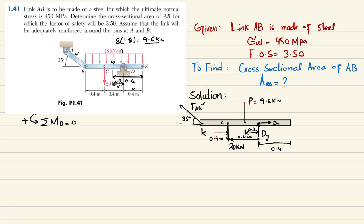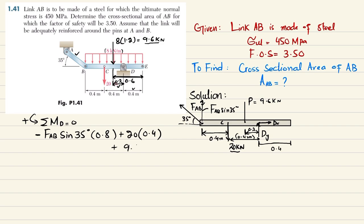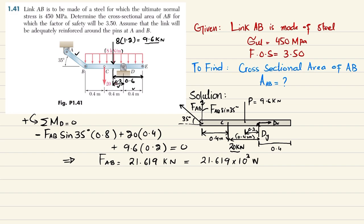Writing the moment equation: −F_AB × sin(35°) × 0.8 + 20 × 0.4 + 9.6 × 0.2 = 0. Solving this gives the force in member AB: F_AB = 21.619 kilonewtons, or equivalently 21.619 × 10³ newtons.